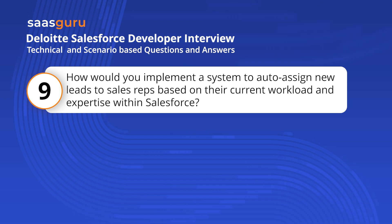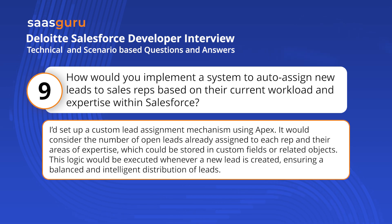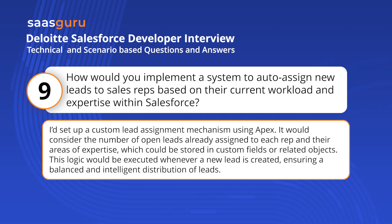How would you implement a system to auto-assign new leads to sales reps based on their current workload and expertise within Salesforce? I'd set up a custom lead assignment mechanism using APEX. It would consider the number of open leads already assigned to each rep and their areas of expertise, which could be stored in custom fields or related objects. This logic would execute whenever a new lead is created, ensuring a balanced and intelligent distribution of leads.